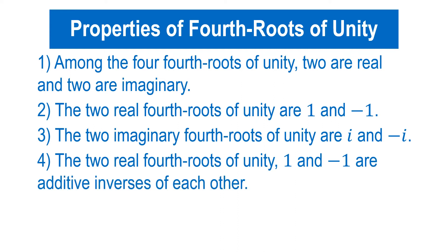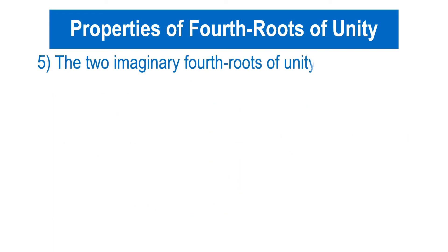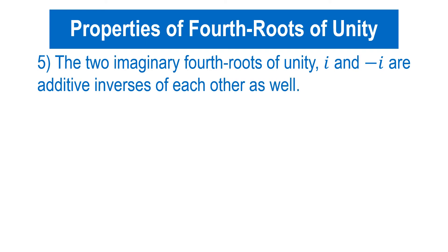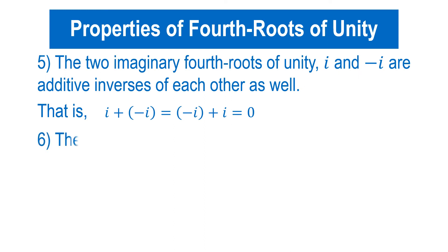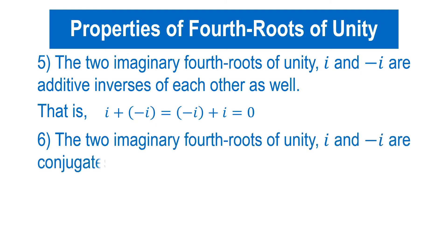Property 4: the two real fourth roots of unity, 1 and −1, are additive inverses of each other — that is, 1 + (−1) = (−1) + 1 = 0. Property 5: the two imaginary fourth roots of unity, iota and −iota, are additive inverses of each other as well — that is, iota + (−iota) = (−iota) + iota = 0.